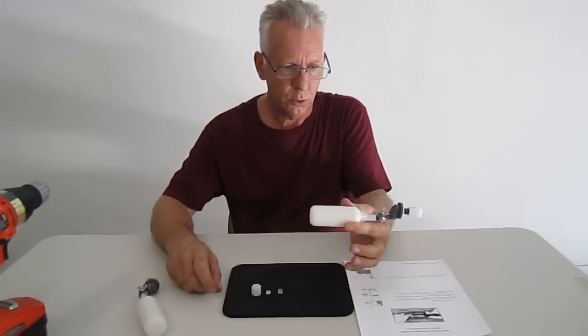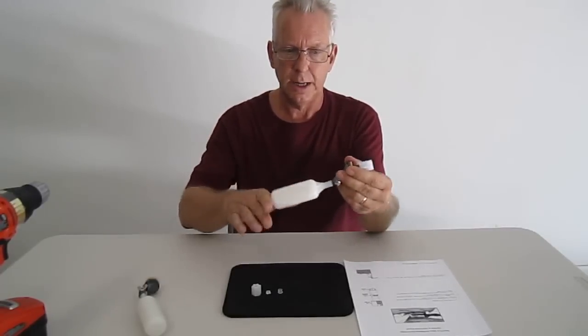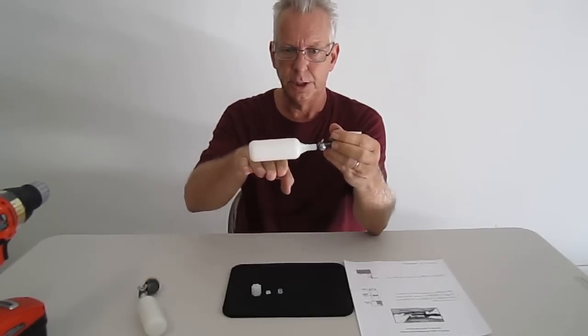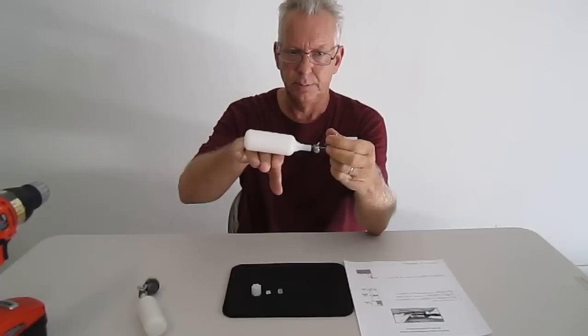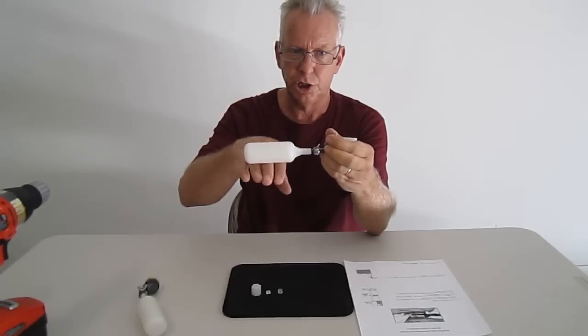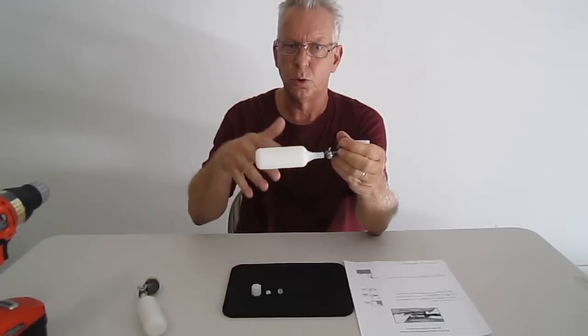You would use this in a reservoir or tank. When the water level rises, it's going to hit the float. That's going to travel up about three quarters of an inch and shut the water off coming into your reservoir or tank.